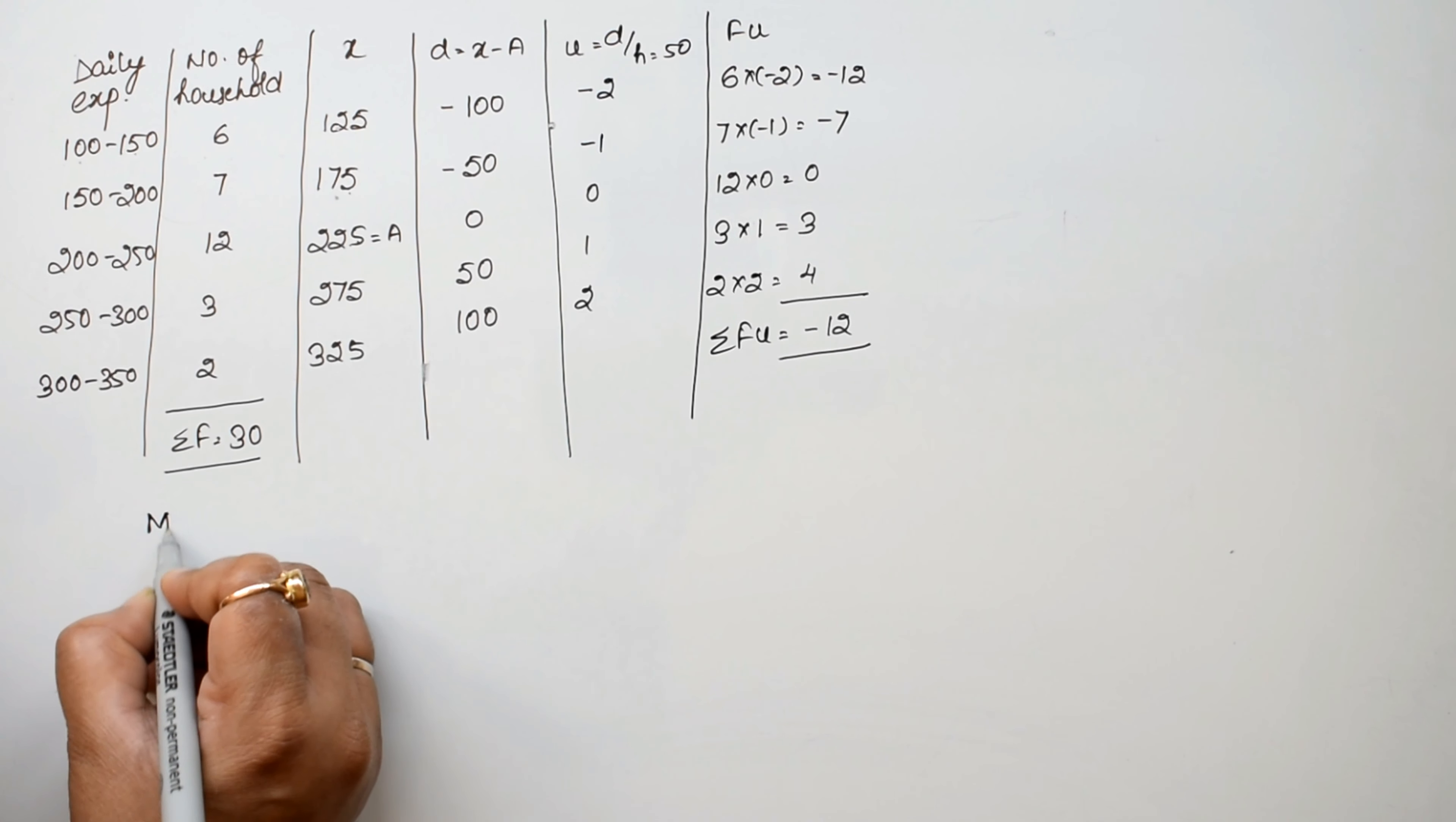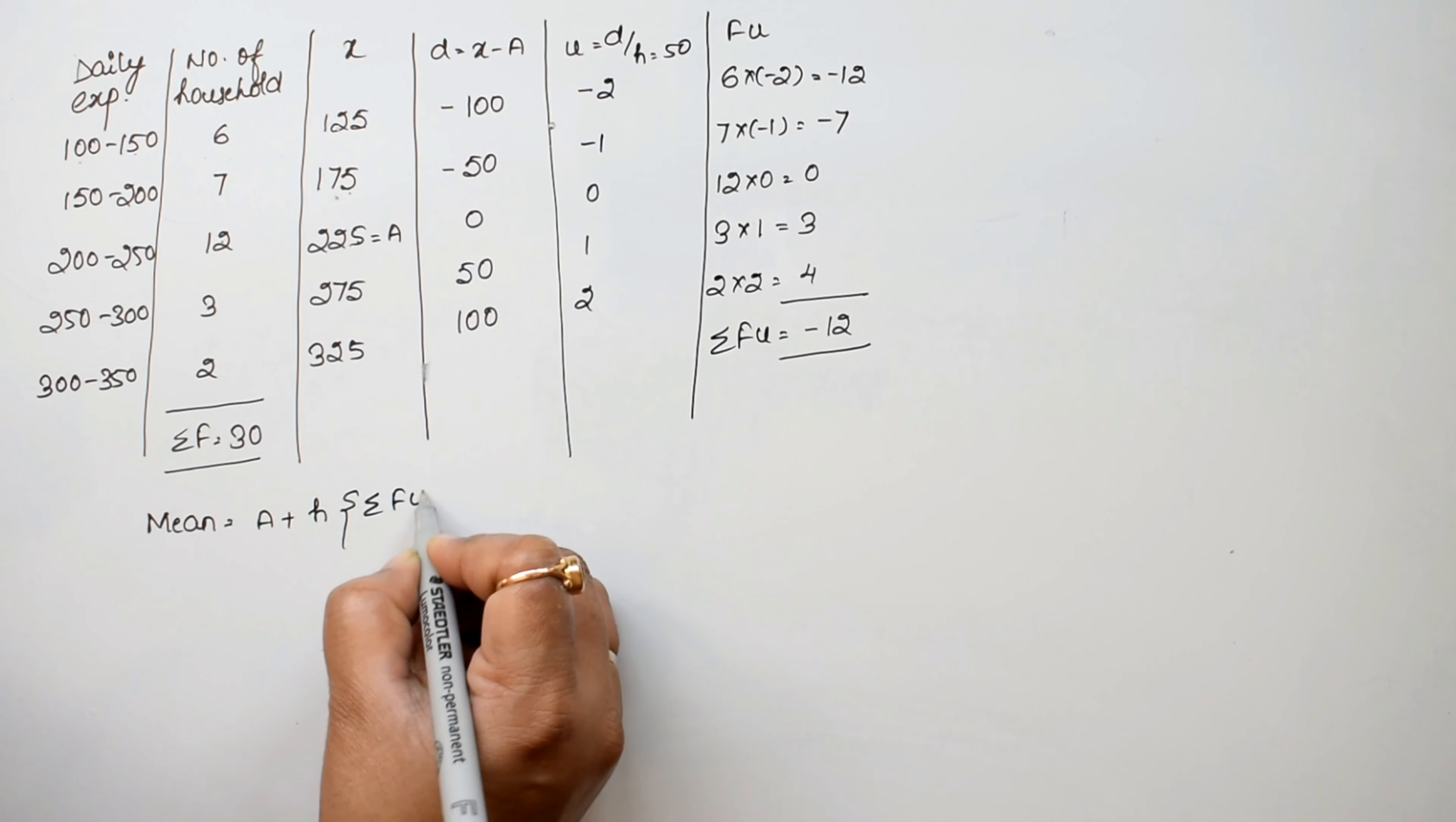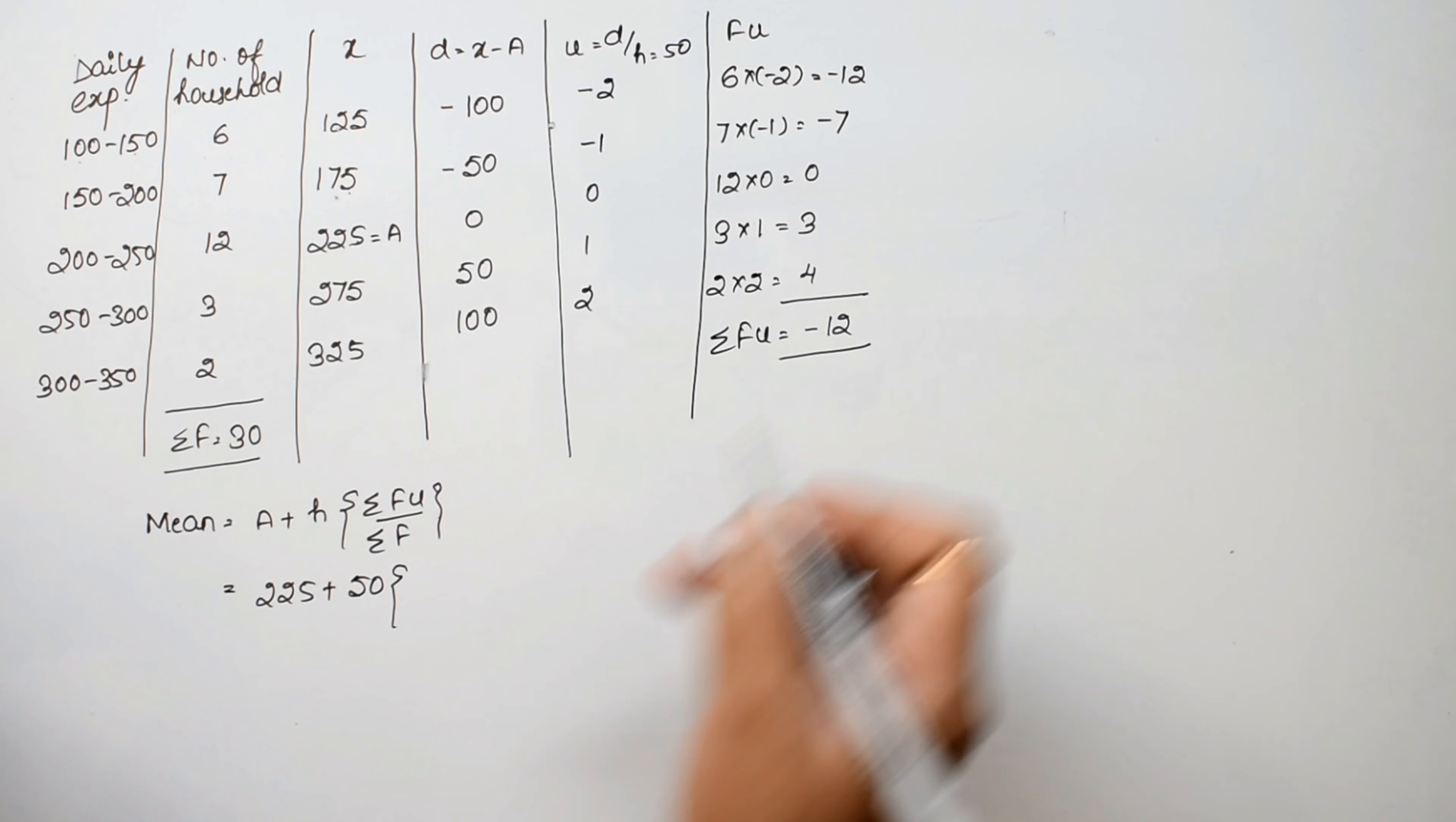Mean equals A plus h into sigma FU upon sigma F. So this is 225 plus 50 into minus 12 upon 30. Calculating: 50 times 12 divided by 30, cancel to get 20. So 225 minus 20 equals 205. The mean expenditure is rupees 205.